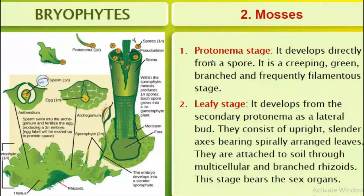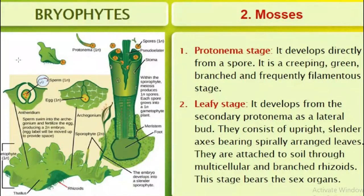The protonema stage develops directly from a spore. It is a creeping, green, branched, and frequently filamentous stage.